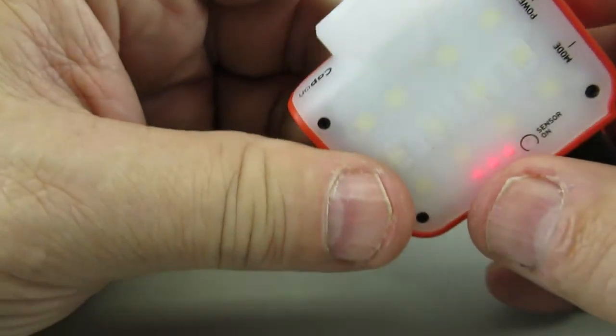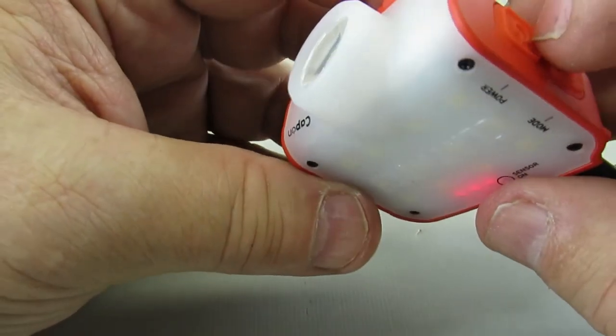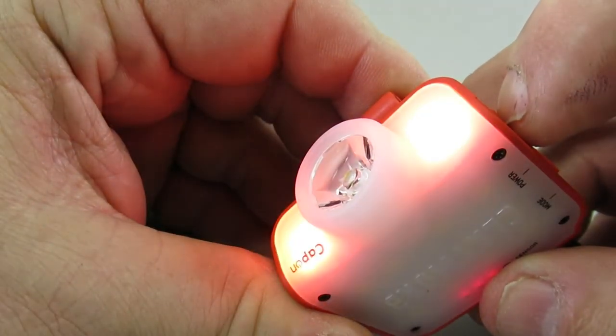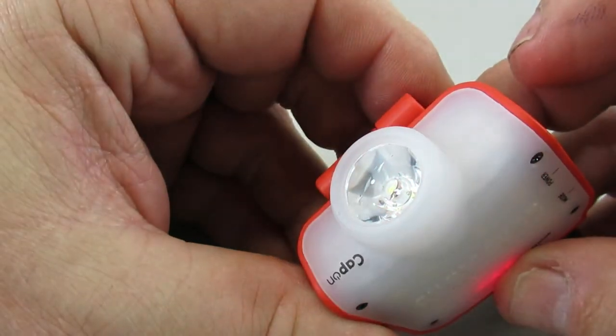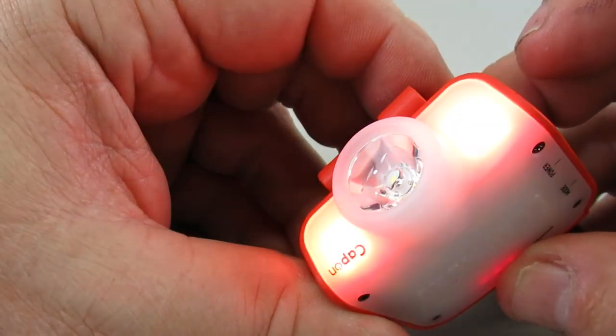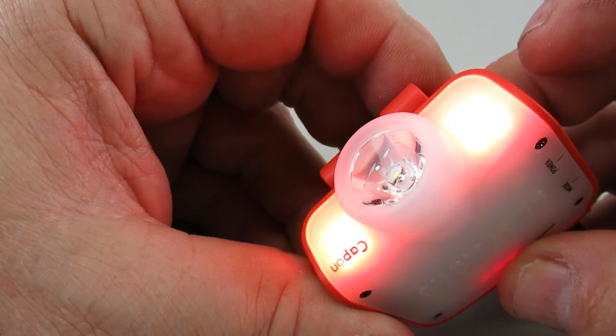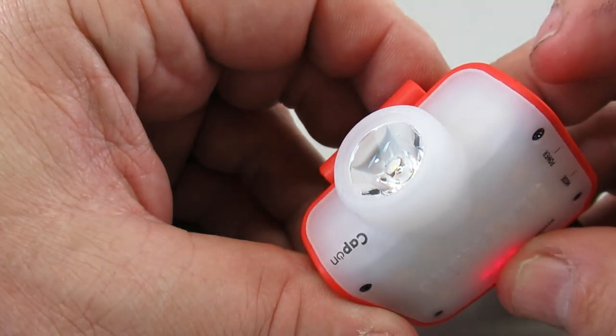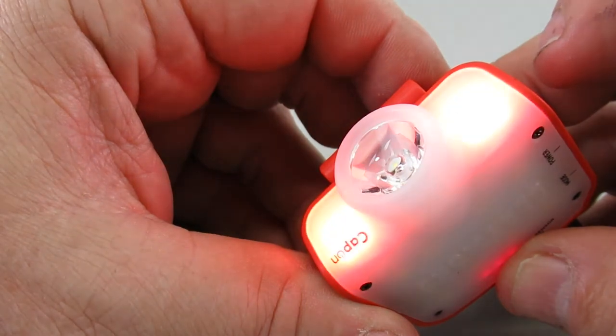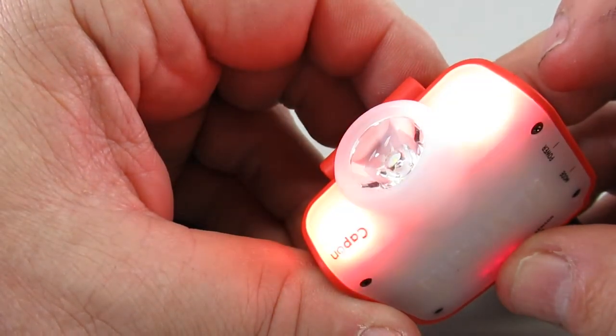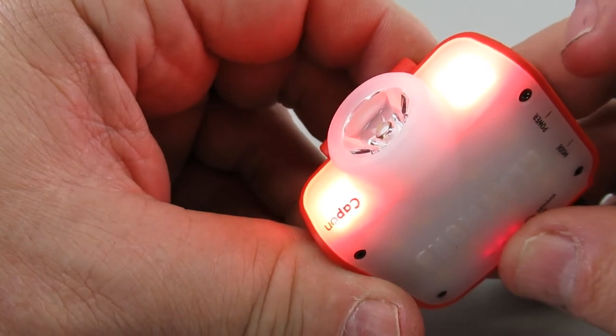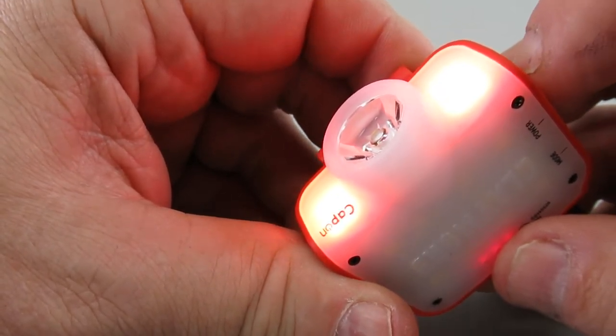If you push the on button and hold it on, it'll go into SOS mode. Whichever light you have activated will do the SOS signal by holding the on button for two seconds or more, and it'll stay that way. Hit it once to stop, one more to turn off.